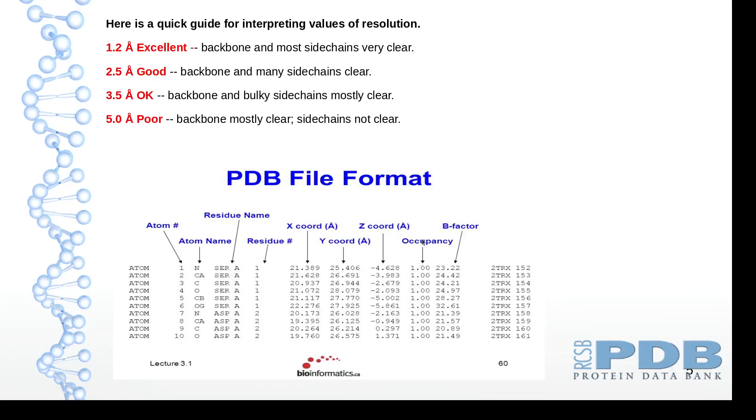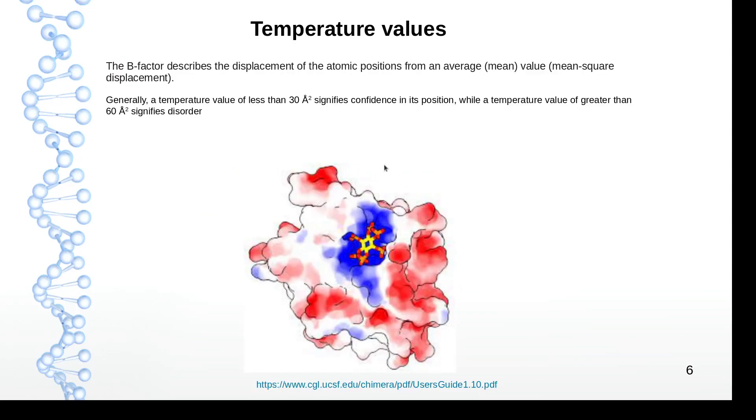So the first one, or the second one here, is called beta factor or the temperature factor, and it describes the displacement of the atomic position from the average. So flexible parts of the protein are going to have higher beta factors, while the core atoms are going to have lower beta factors.